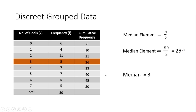We have to find the median element. Since there are 50 elements — total n is greater than or equal to 50 — we take n / 2 = 50 / 2 = 25. We need the 25th element. Using the cumulative frequency column: up to the first group there are 6, then 10, then 21, then 26. The 25th element falls in the group with cumulative frequency 26, so the median value is 3.